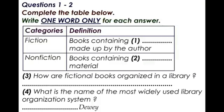All libraries have a system for organising and classifying non-fiction books. The most widely used system is the Dewey Decimal System. It was designed by an American librarian named Melvin Dewey. It is called a decimal system because it divides all non-fiction books into ten major categories. These are further divided into subdivisions.